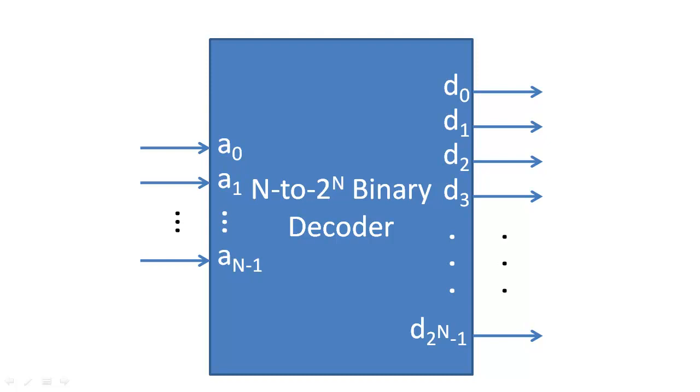In some applications, we also add an enable input bit to the decoder. When the enable bit is 1, the decoder behaves in the way that we described earlier. When the enable bit is 0, all of the decoder outputs 0.